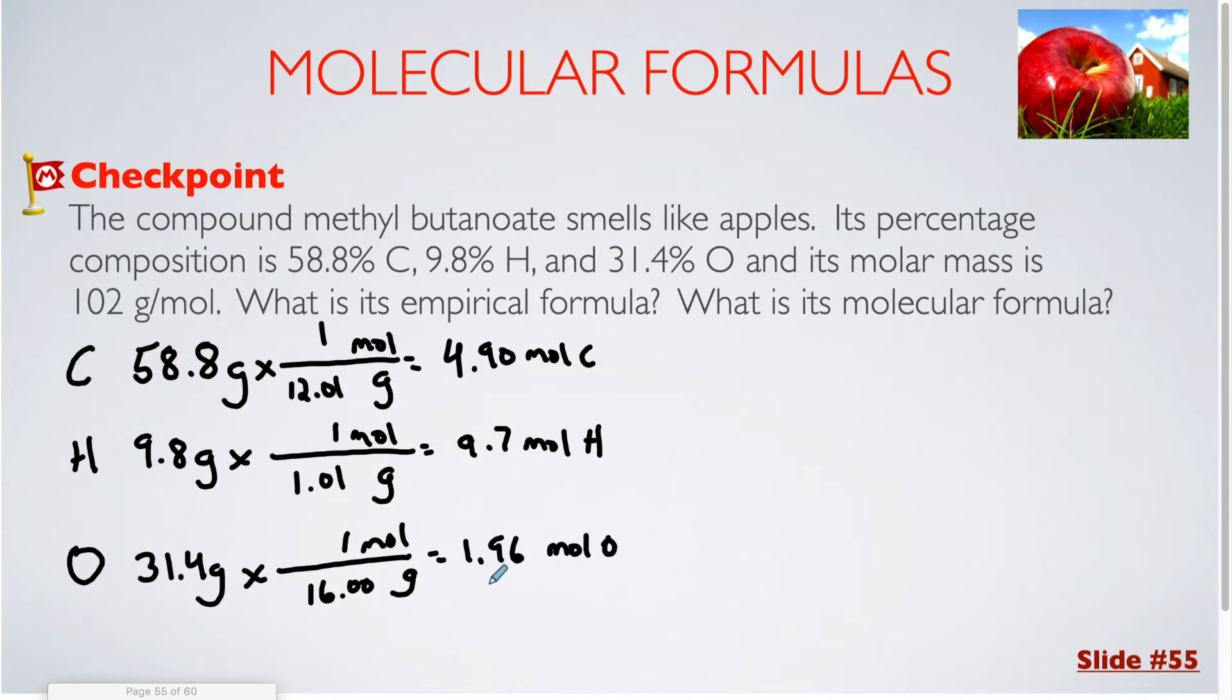Our next step is to divide each of these by whichever number was the smallest, which is the 1.96. So I'm going to be hoping to get a whole number ratio from this. Now for the first one, this comes out to 2.5. The next one comes out to 5. The last one comes out to 1.